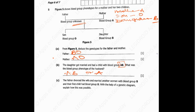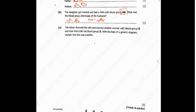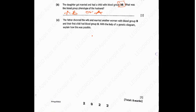Then the father divorced the wife and married another woman with blood group B, and their first child had blood group O. With the help of a genetic diagram, explain how this was possible. This is the first question that actually requires us to draw a diagram, and you should draw it in full, completely showing the parents' phenotype, genotype, gametes, and everything.